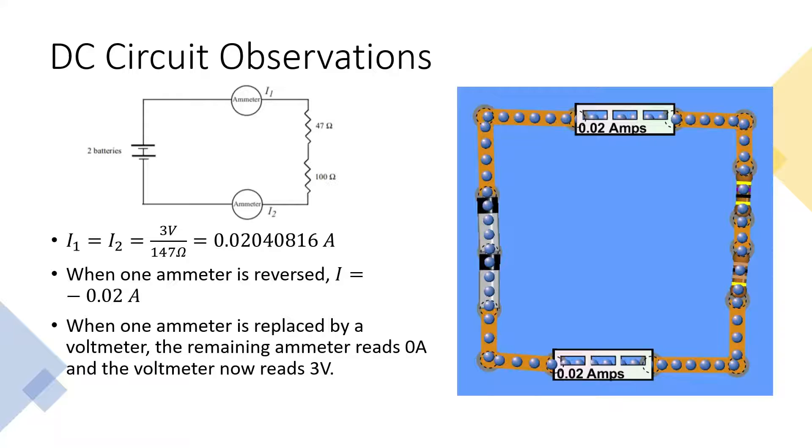DC circuit observations. When we construct the circuit shown above, we find that the current running through the wire is constant, as stated by the loop rule. It is the same for ammeter 1 and ammeter 2. It is the value of 3 volts over 147 ohms, which is approximately 0.02 amps.